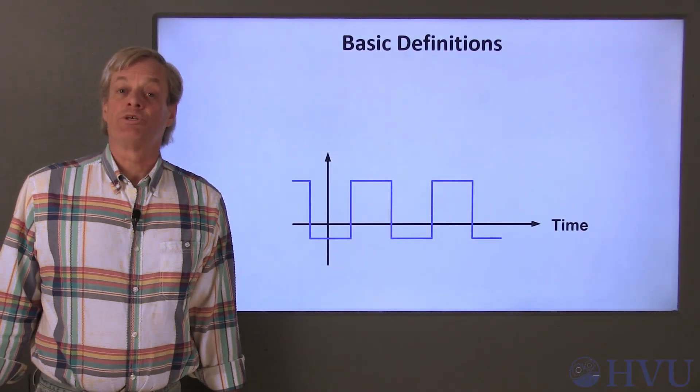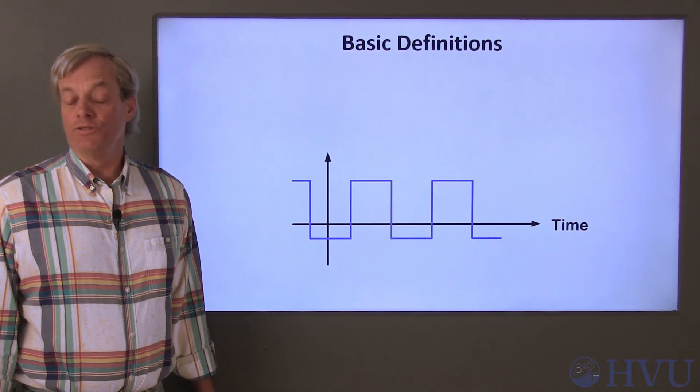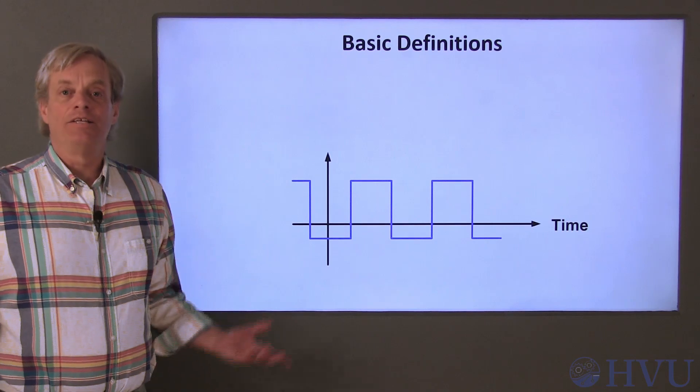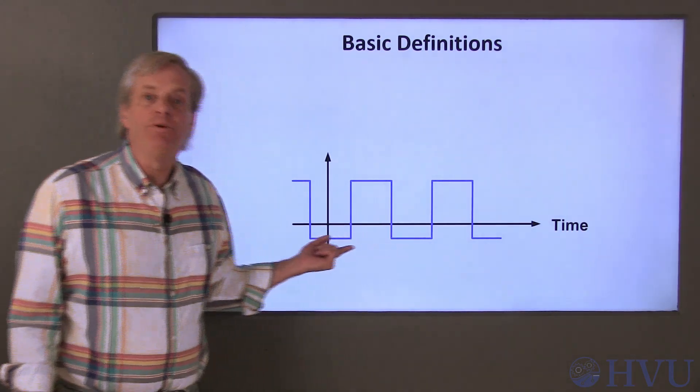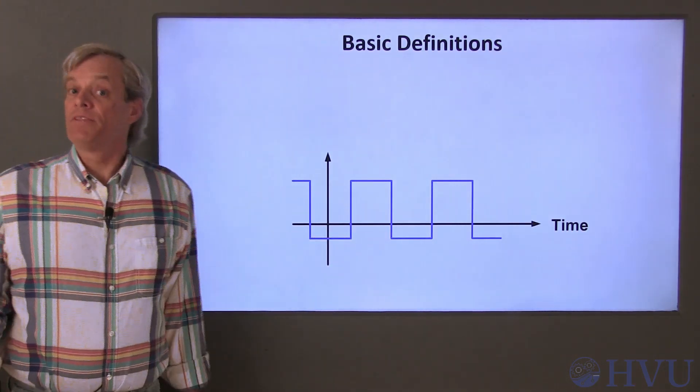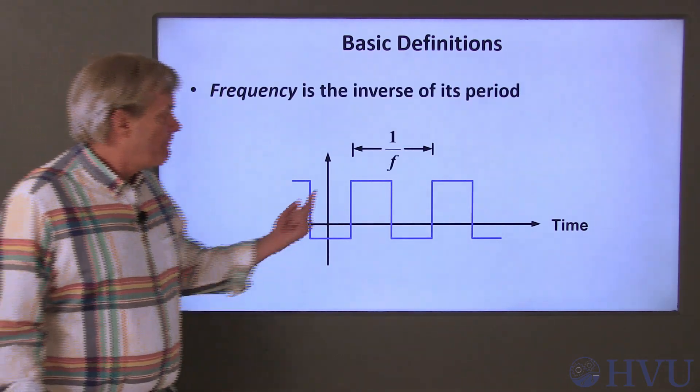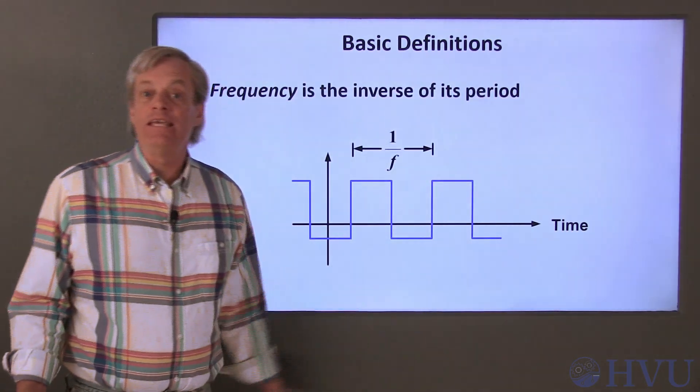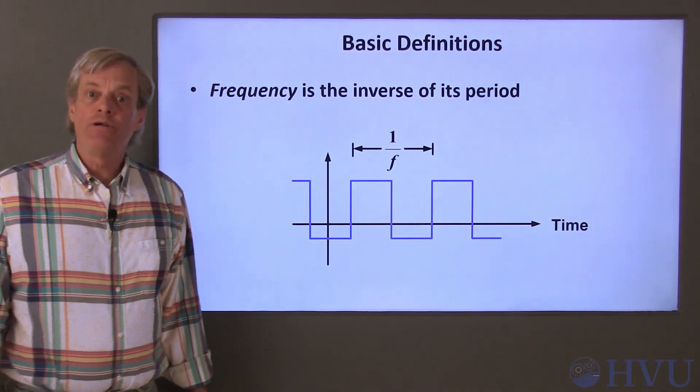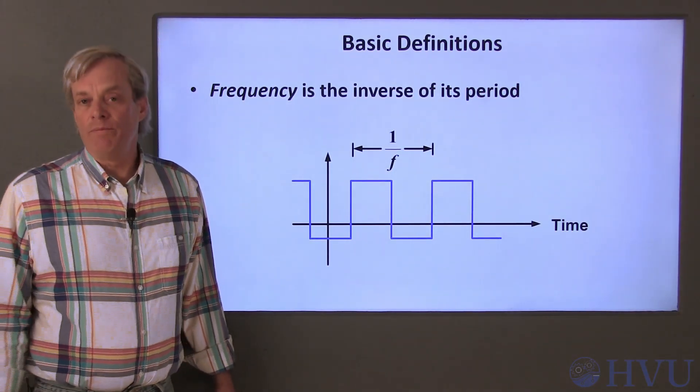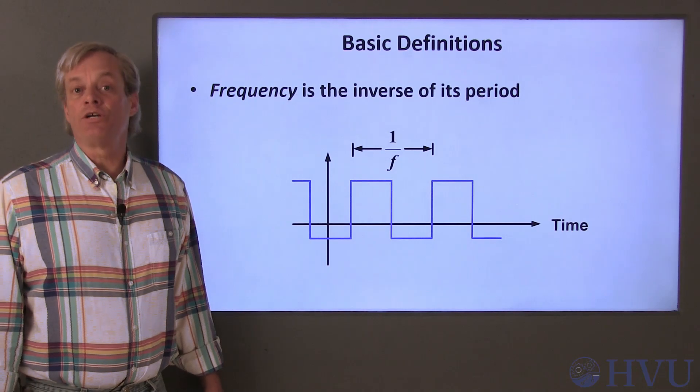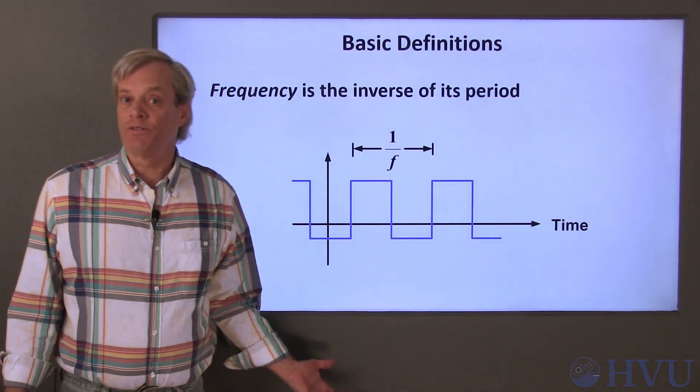There are a number of terms which are commonly used when generating signals using a waveform generator. I'll define those based on this simple square wave shown here, but the definitions hold regardless of the specific wave shape. The frequency of a signal is the inverse of the period. Frequency is the rate at which the signal repeats itself. Units of frequency are Hertz, which is the same as cycles per second.